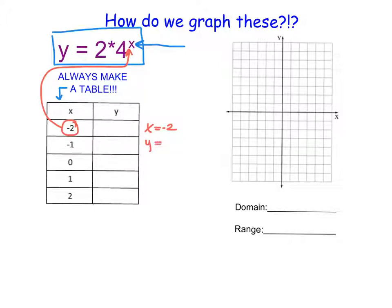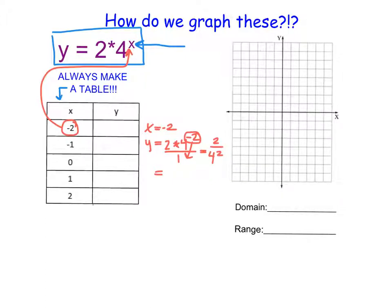We have y equals 2 times 4 to the power of negative 2. Using exponent properties, we rewrite this with a positive exponent: 2 in the numerator and 4 to the positive 2 in the denominator. Four to the power of 2 is 16, so we have 2 over 16, which simplifies to 1 eighth. So when x equals negative 2, y equals 1 eighth.